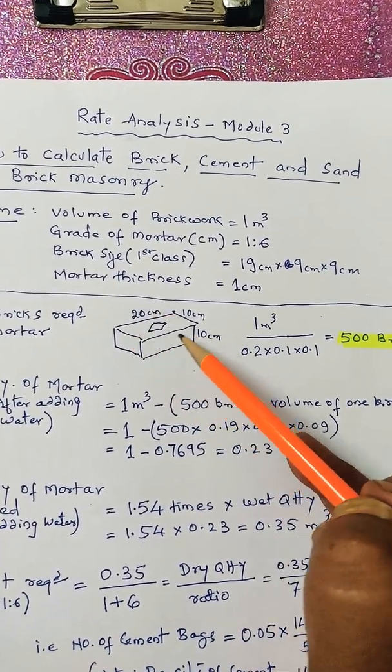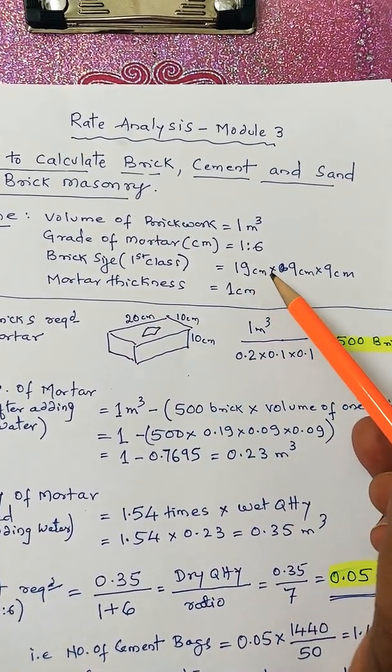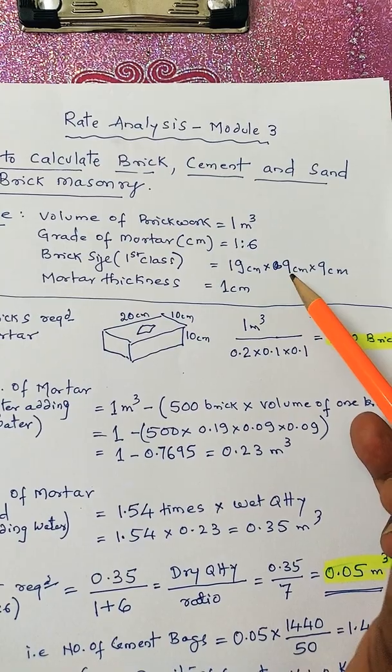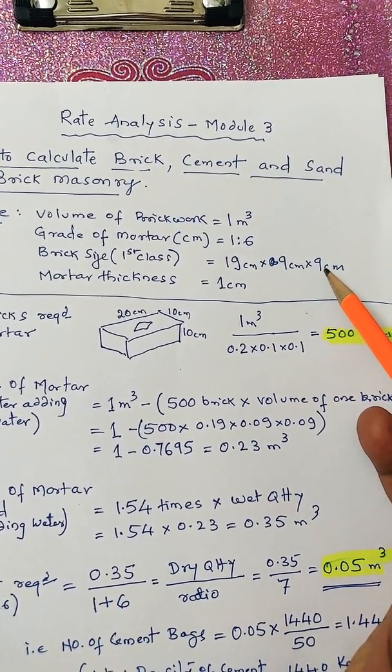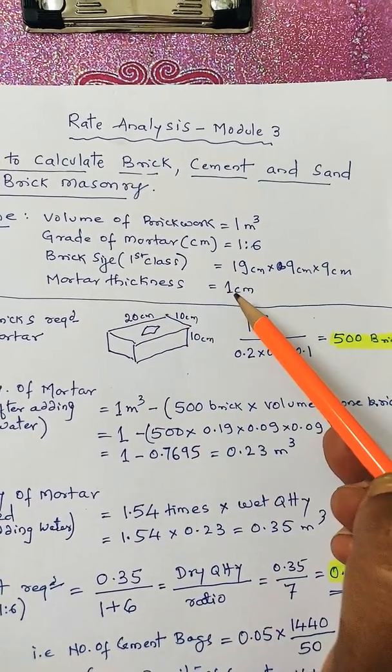This is with mortar. So basic brick size is 19 centimeter by 9 centimeter by 9 centimeter. Mortar thickness is 1 centimeter.